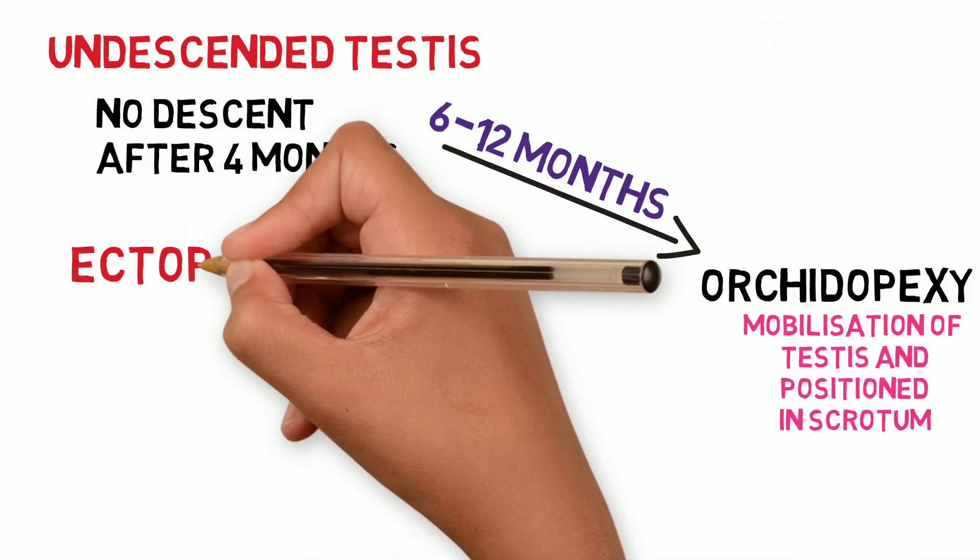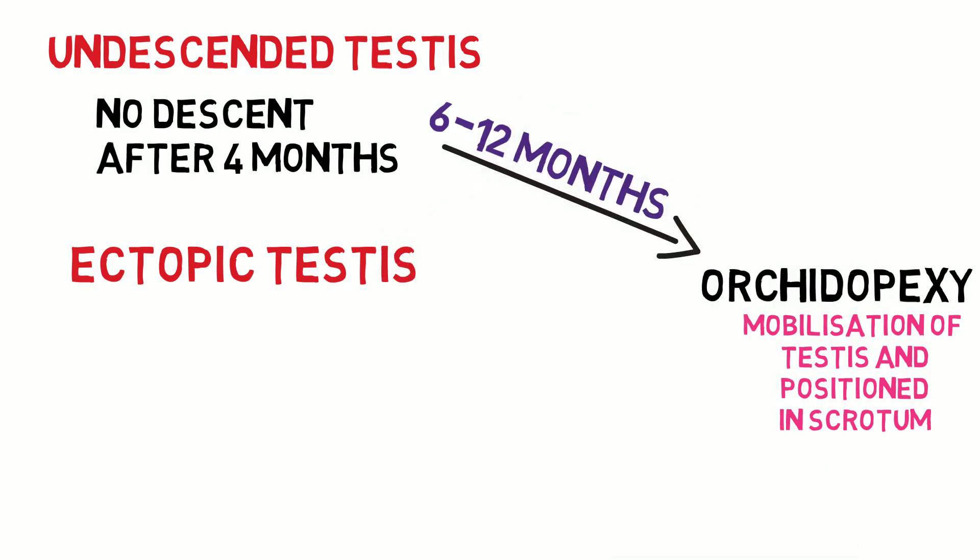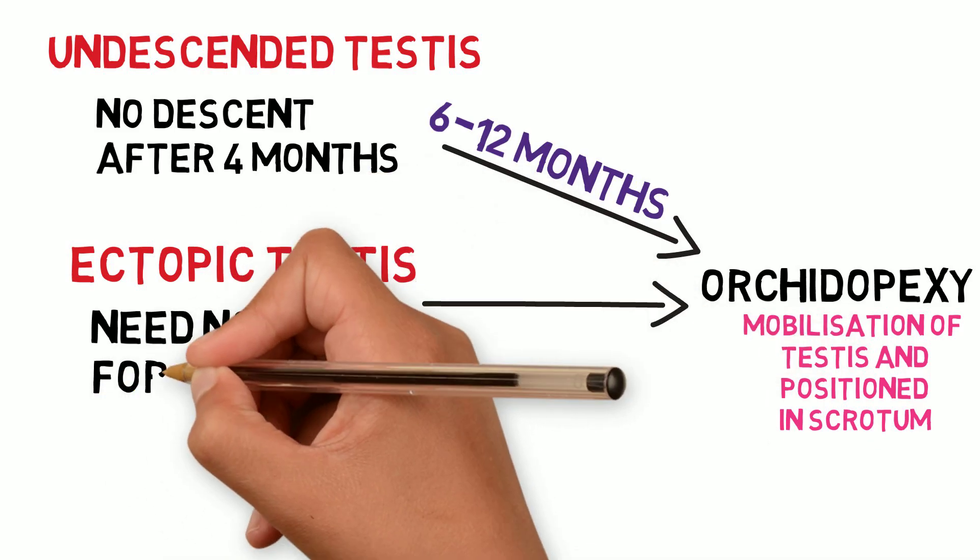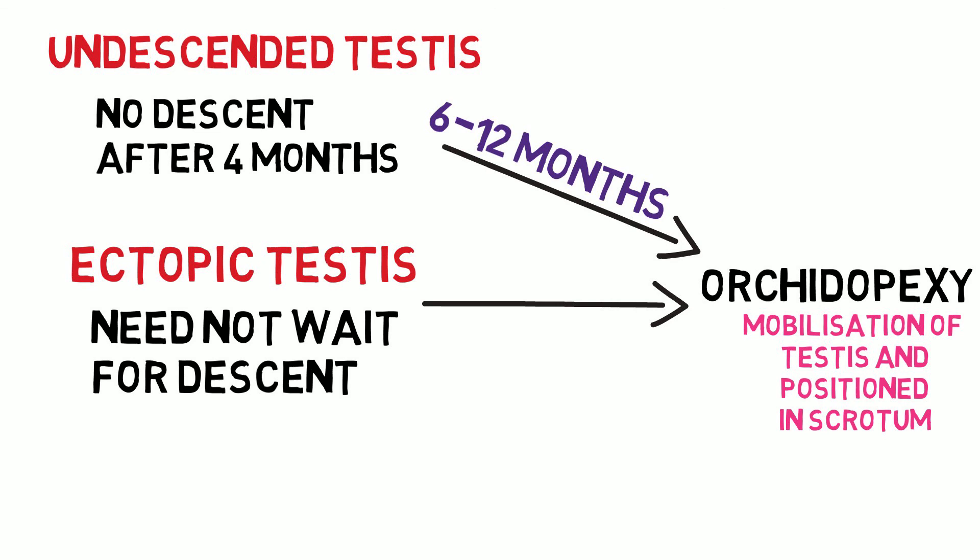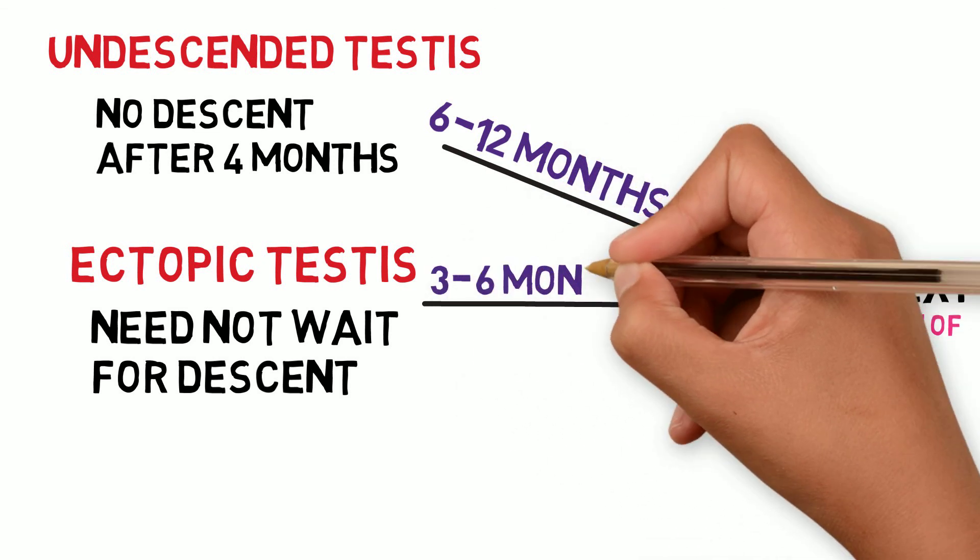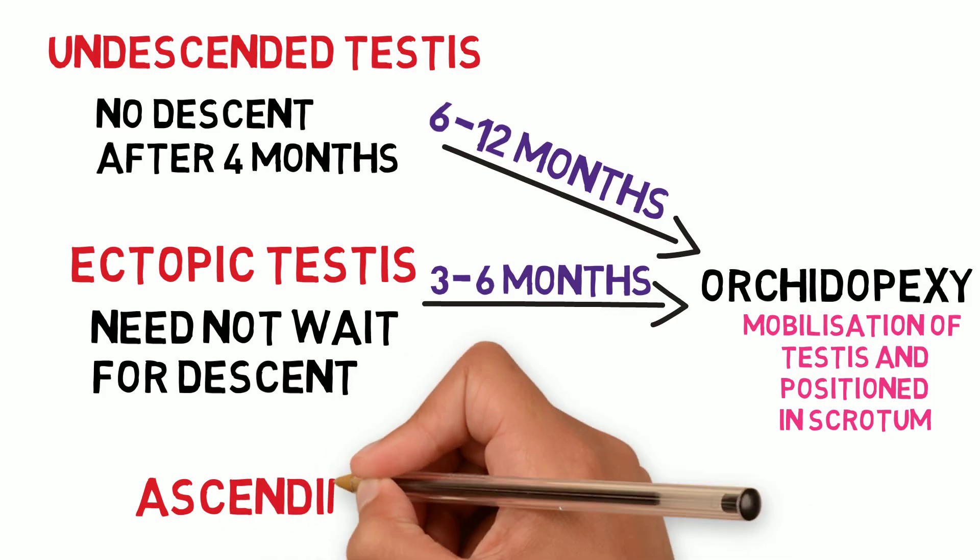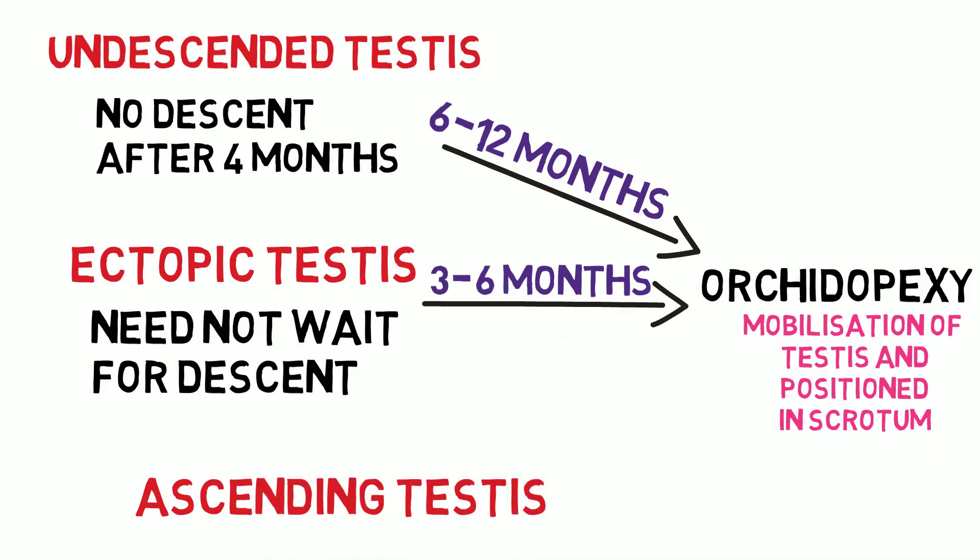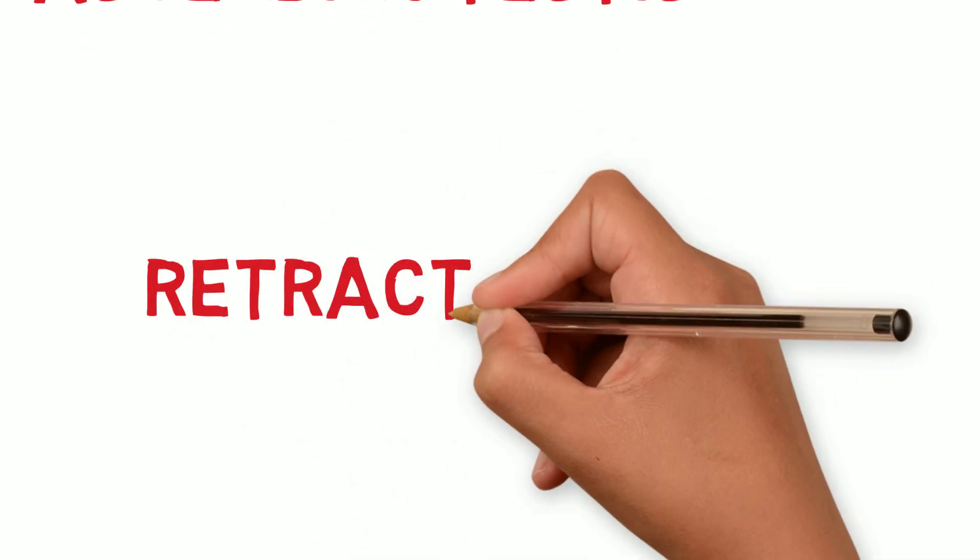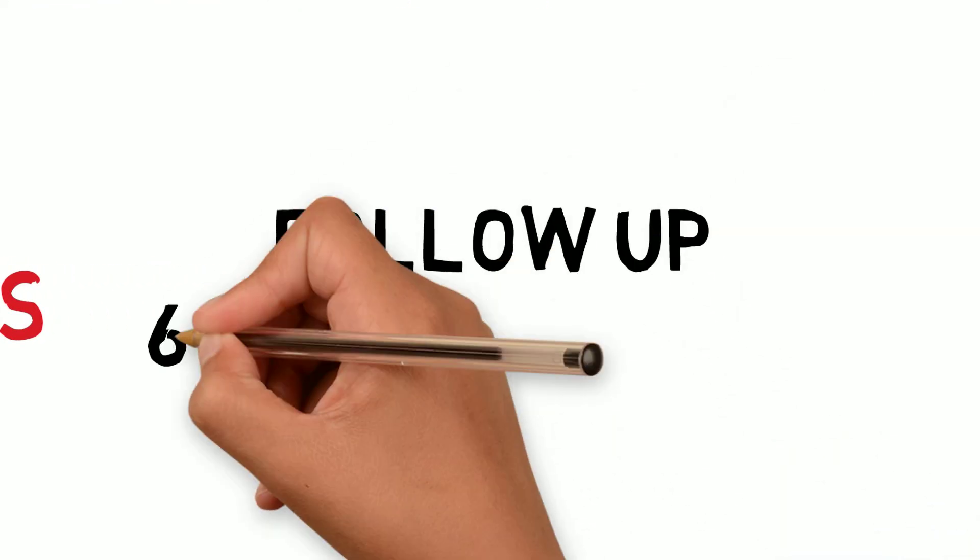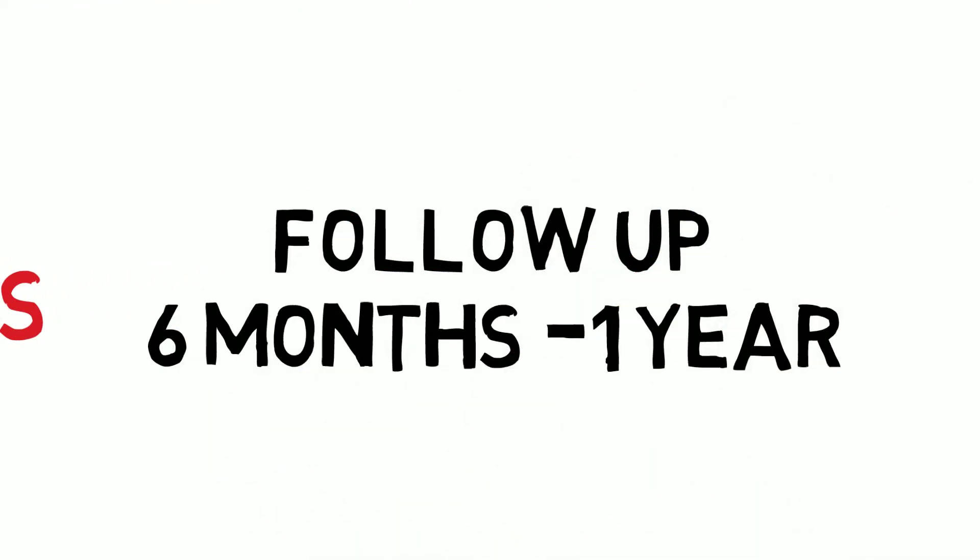For ectopic testis also, treatment is orchidopexy, but here we need not wait for descent as it's not possible. So it is usually done between 3 to 6 months of age. For ascending testis also, orchidopexy. For retractile testis, it's mainly follow-up once in 6 months to 1 year.